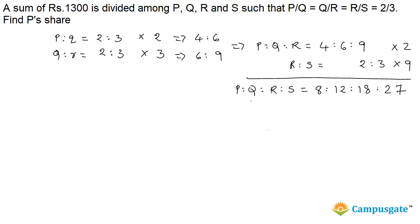We got a common ratio among P, Q, R, S so that we can easily divide 1300 among these people. The total amount to be distributed is 1300 and we have to find P's share.